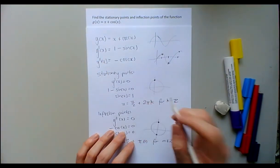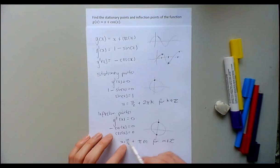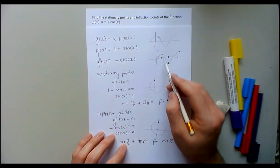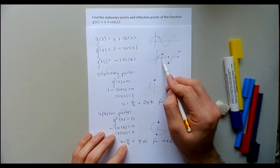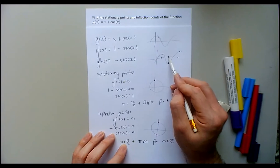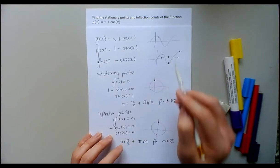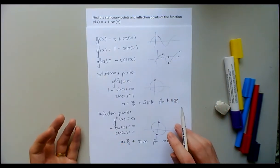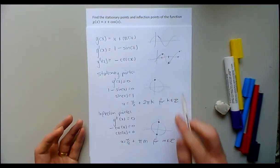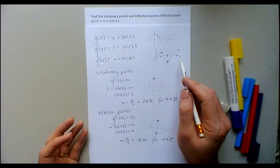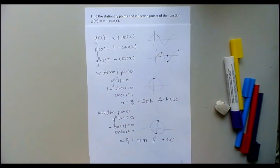Every π away from π/2 hits this point, this point, and this point — so all the places where sine has its turning points are exactly the places where g has its inflection point candidates. That's really cool.